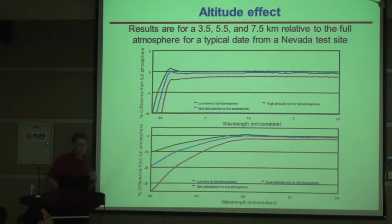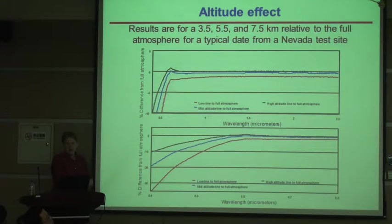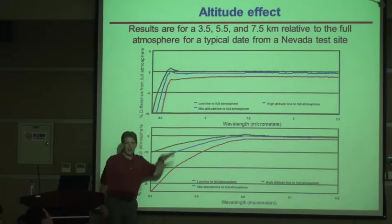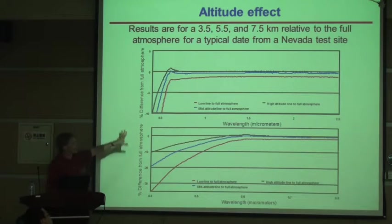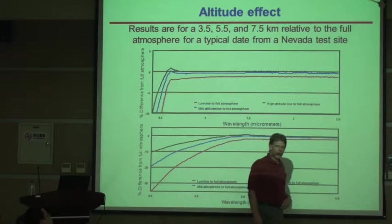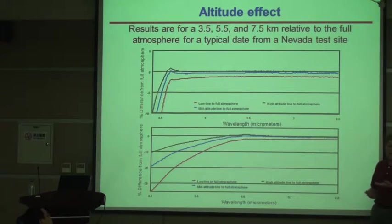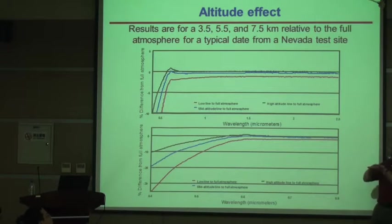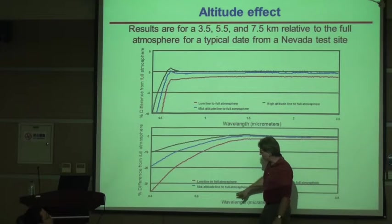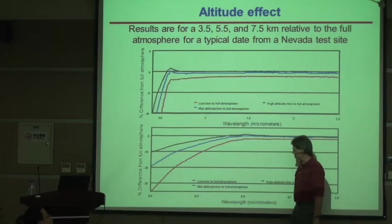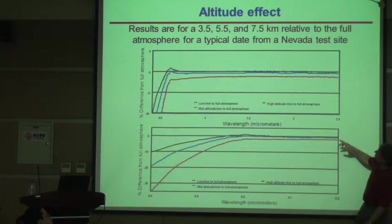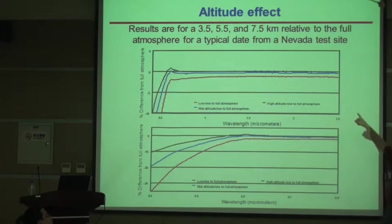Since Mark was talking about airborne measurements, we can look at the impact as a function of altitude. The question was: if we were going to fly our radiometers in an aircraft, how high would we need to go before we essentially don't have to worry about atmospheric radiative transfer? We show a low, mid, and high altitude line corresponding to 3.5, 5.5, and 7.5 kilometer elevations relative to our test site — so those are 3,000 meters above the surface — and plot the percent difference from the full atmosphere calculation.